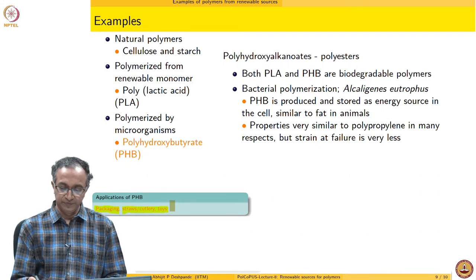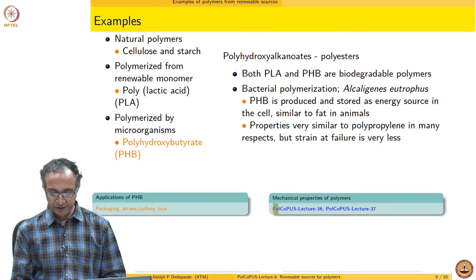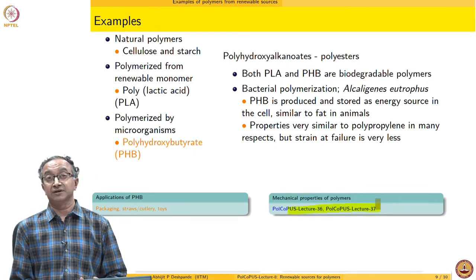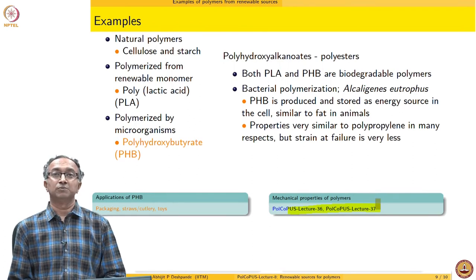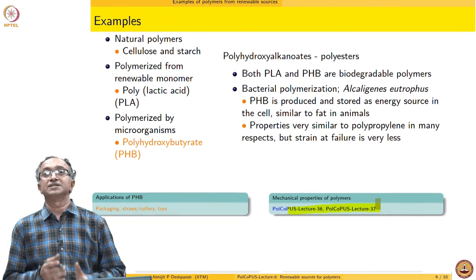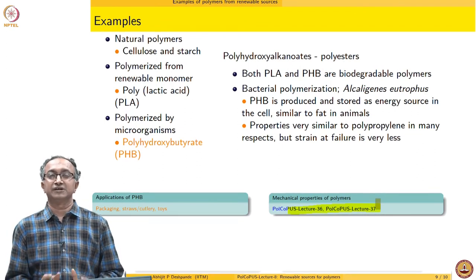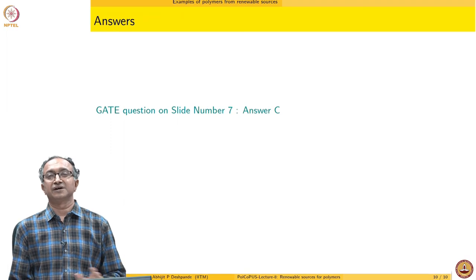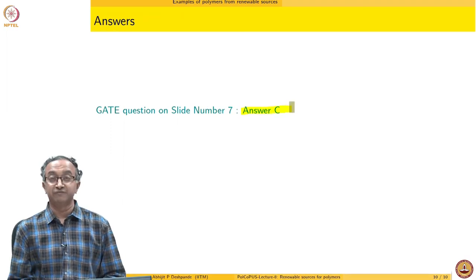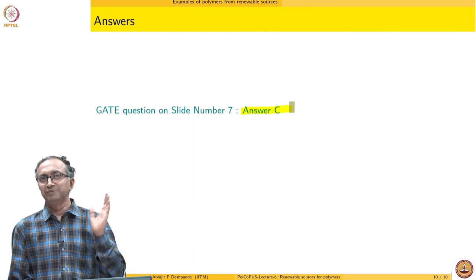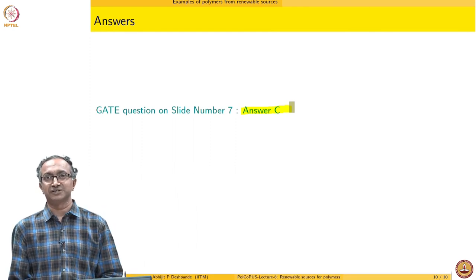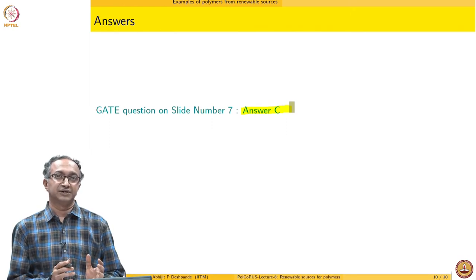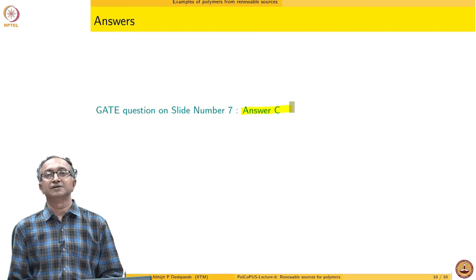I also mentioned strain at failure — in 2–3 lectures on mechanical properties of polymers, we will spend a lot more time talking about strength, toughness, strain at failure, and various other aspects related to mechanical properties of polymeric materials. I hope this gives you an idea of the challenges associated with making polymers as renewable materials. Thank you.